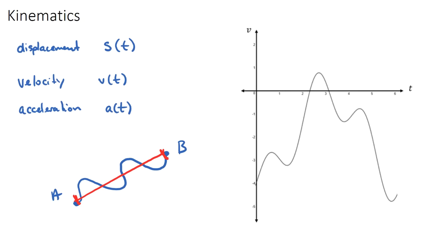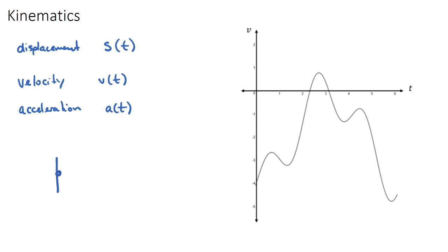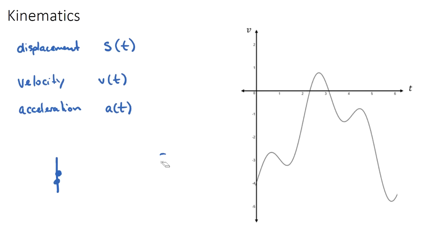You might hear someone say the 'bird's eye' distance — looking down, it's just from here to here. Displacement is especially important when objects change direction. If you travel 50 meters one way and then run back to where you started, your total distance is 100 meters, but your displacement is zero because you finished where you started.